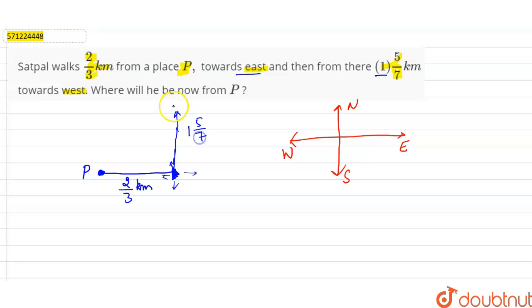So Satpal is here. So from P, he is towards northeast, in the northeast direction.